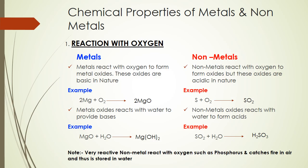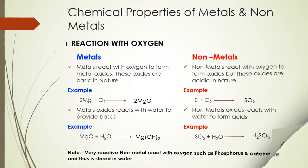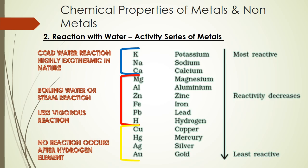Nonmetals react with oxygen to form oxides which are acidic in nature. For example, sulfur reacts with oxygen to form sulfur dioxide. When these nonmetal oxides react with water, they form acids. For example, sulfur oxide reacts with water to form H₂SO₃, which is acidic in nature.